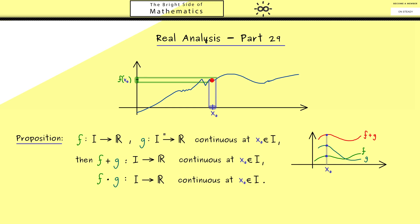Now I can tell you this is very simple to prove if you use the sequence definition for the continuity. Because then you just need to use the already known limit theorems. And then you might already recognize we can prove the same thing for the quotient of both functions. However, of course there the domain I will change a little bit.